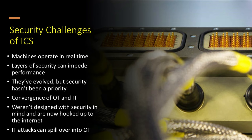When it comes to security challenges of ICS and SCADA: these machines operate in real-time, and layers of security can potentially impede their performance — they can't tolerate latency created by security software in the background. Even though these machines have evolved over time significantly, there hasn't been as much attention to security capabilities. There's a convergence of OT and IT, which leads to the exposure of industrial environments with decades-old technology to the internet and to the cloud in order to improve business and operational efficiencies. Along comes new potential attack vectors into their industrial control systems. These systems weren't designed with the internet and security in mind, and now they're out there, vulnerable, making the most prevalent attacks in 2021 internet-based.